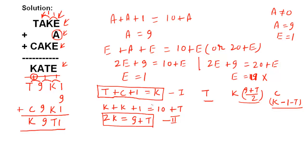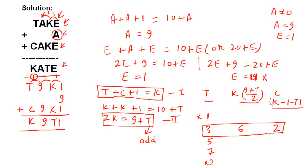Trying T = 3: K = (9+3)/2 = 6, C = 6 − 1 − 3 = 2. Values 3, 6, 2 are all distinct and not previously used — this works! For verification: try T = 5: K = 7, C = 7 − 1 − 5 = 1 — but 1 is already E, ruled out. Try T = 7: K = 8, C = 8 − 1 − 7 = 0 — C = 0 would make CAKE a three-digit number, ruled out.